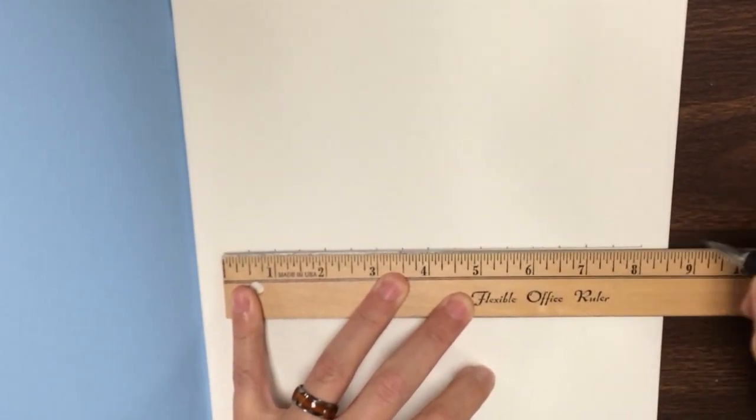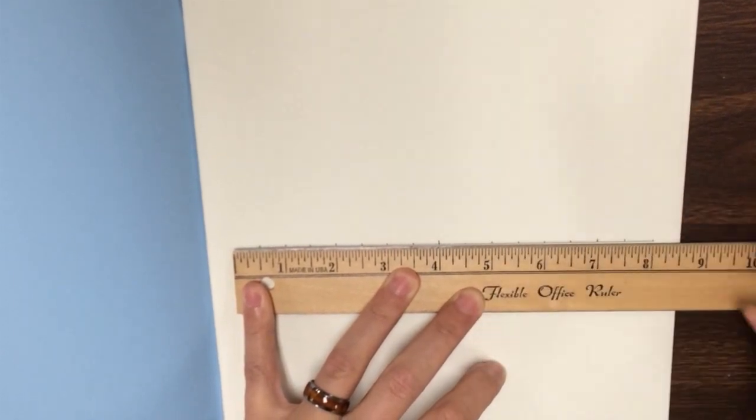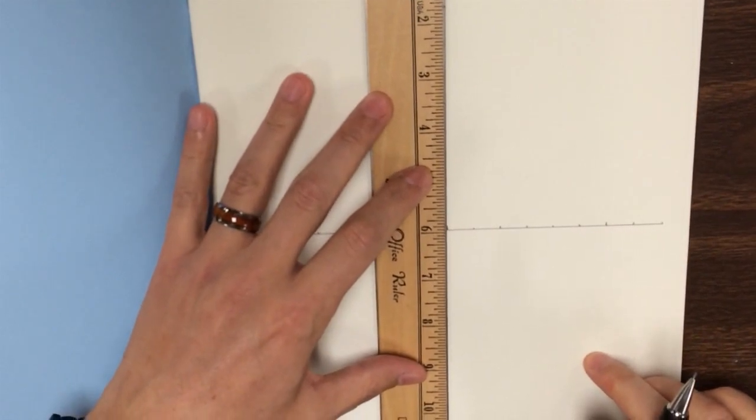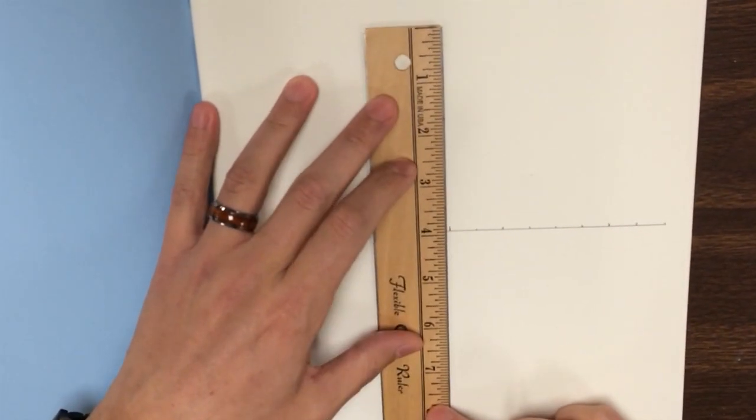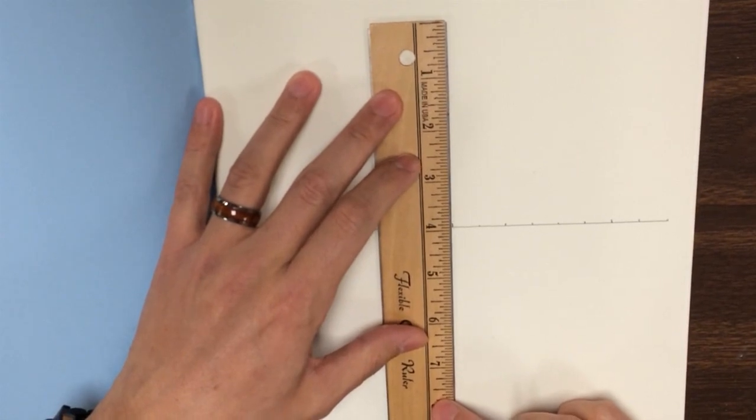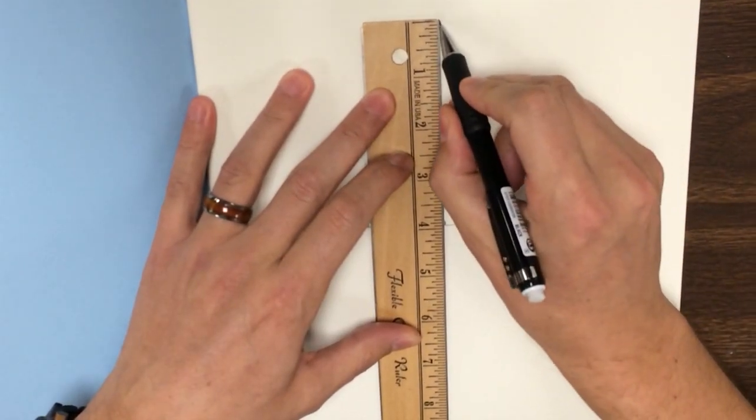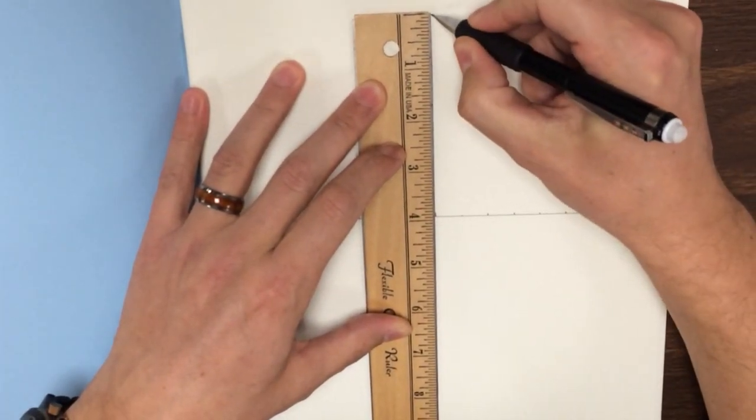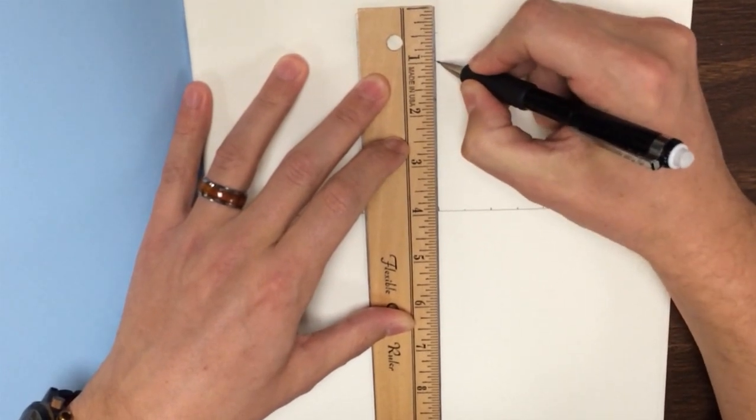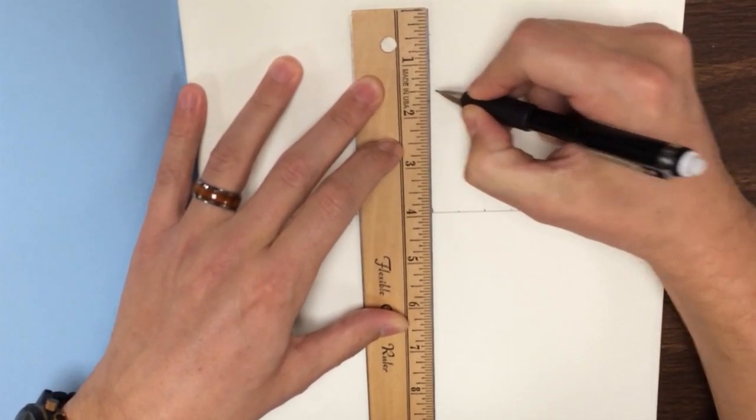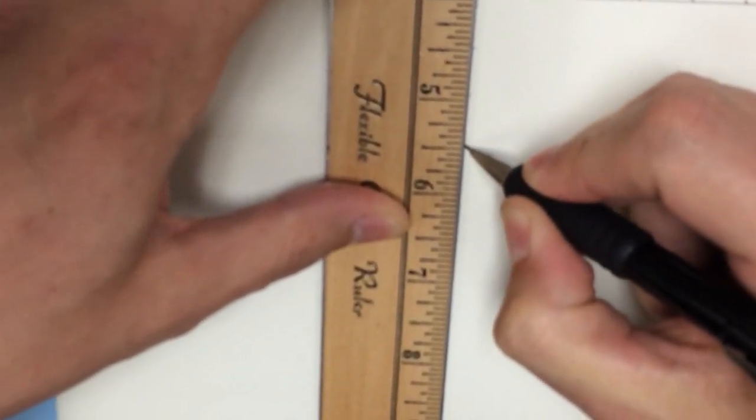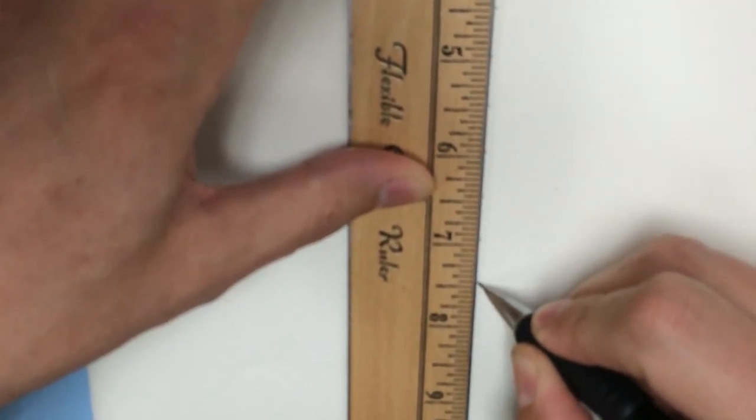Now, half of eight is four, so I'm just going to make this line a little bit longer to show me where I'm going to draw my Y axis. Again, I will line up the four so that I make sure I get eight inches. Draw my line, and I'm going to do again what I did earlier. I'm going to just every half inch make a small mark, so that it looks like I have a T.